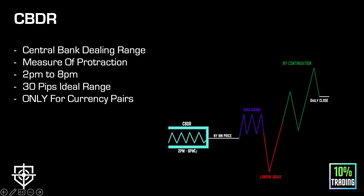The CBDR runs from 2pm to 8pm New York time — that's very important. As you can see in this flowchart, we go from 8pm to New York midnight. The range that forms, we want it to be around 30 pips ideally. Also, the CBDR needs to be used for currency pairs only — don't try to apply it to indexes like US30 or US500. It's not made for those; the time aspect is different, and central banks connect to currencies.